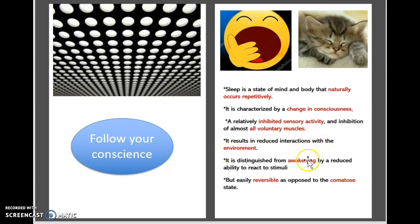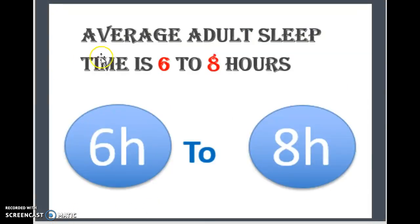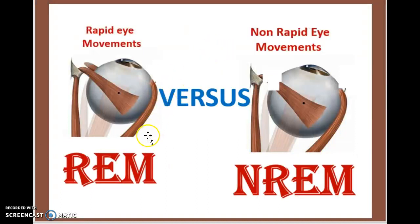Sleep is distinguished from wakefulness by a reduced ability to react to stimuli, however this is easily reversible — as opposed to a comatose state. Statistically speaking, the average adult sleep time is around six to eight hours, with eight being the recommended amount.